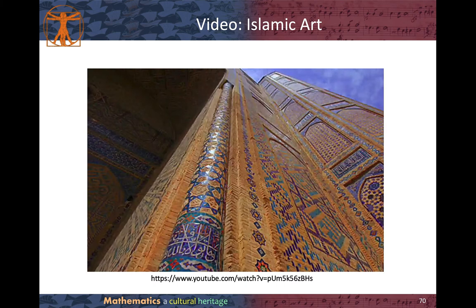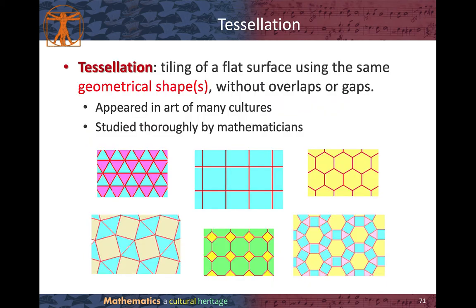We can take a look at this YouTube video to appreciate Islamic art. Many mosaic artworks make use of tessellation. Tessellation means tiling of a flat surface using the same geometric shapes without overlaps or gaps. It appears in the arts of many cultures and was studied thoroughly by mathematicians. You can see that this one is tessellation by triangles, this one by squares, and this one by hexagons.